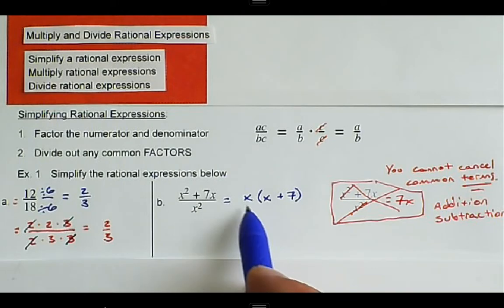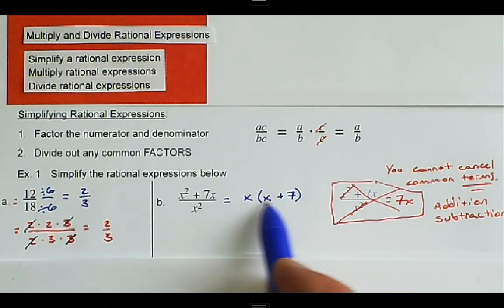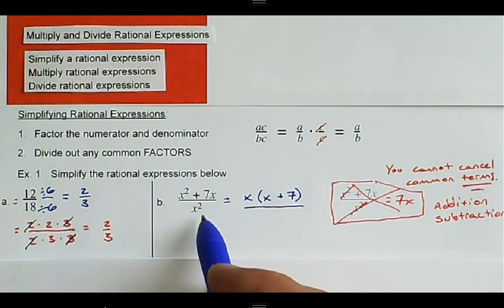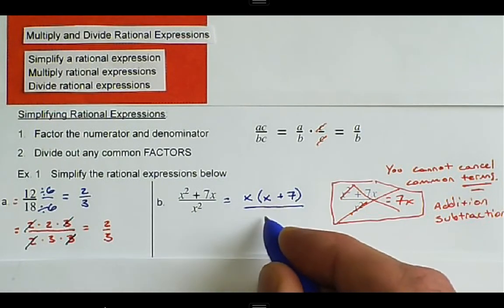Now, in the numerator, these are joined by multiplication. This is x times the binomial x plus 7. In the denominator, we can factor this as well. We can factor an x out.